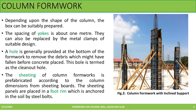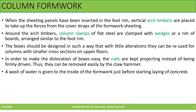Depending upon the shape of the column, the box can be suitably prepared. The spacing of the yokes is about one meter, and they can be replaced by metal clamps of suitable design. We can also see a clean-out hole at the bottom of the formwork to remove the debris which might have fallen before concrete is placed. The sheeting of the column formwork is prepared from sheeting boards or wooden planks, and it is placed into the foot room which is anchored in the soil by steel bolts. When the sheeting panels have been inserted, vertical arch timbers are placed to take the forces, and these arch timbers are surrounded by column clamps of flat steel, which are clamped with wedges or a rim of boards.